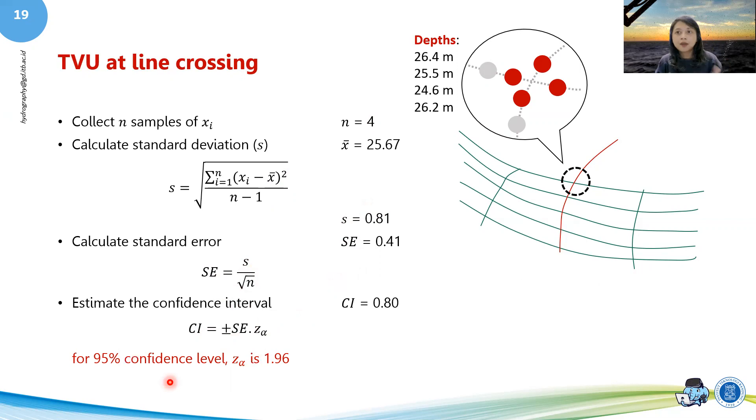The confidence interval here is basically just the standard error times your confidence level. For every single confidence level in hydrographic surveying according to S44 standard by IHO is always 95 percent, so your z alpha is always 1.96.